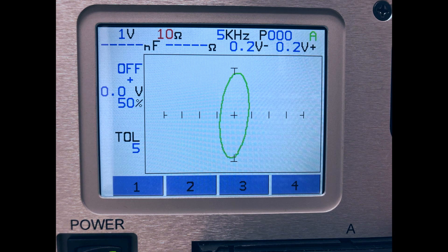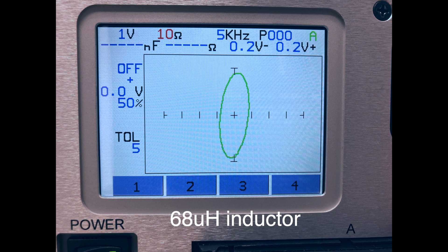This smaller 68 µH inductor is using the 10 ohm resistance and 5 kHz frequency ranges. The signature is similar, but changes to the tracker range were necessary because of the reduced value.